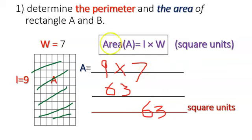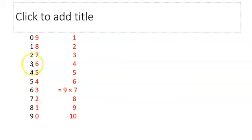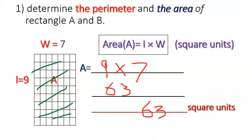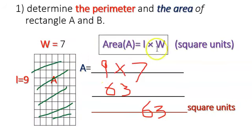For the multiplication table for number 9, I write down 0 through 9 in black numbers, and then I start from 9 and count down: 8, 7, 6, 5, 4, 3, 2, 1, 0. This gives 1×9, 2×9, 3×9 … and 7×9, which equals 63. So the answer is 63 square units for the area.